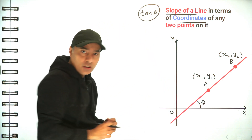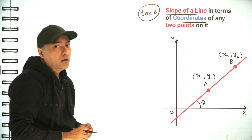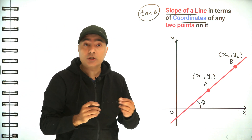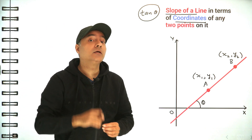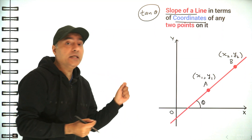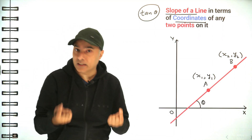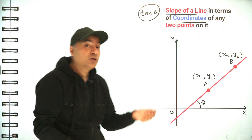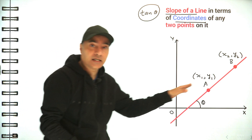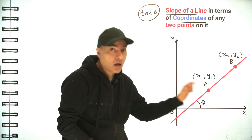All we have to do is find the value of tan(theta). Now tan(theta) is a trigonometric ratio, and to find the value of a trigonometric ratio we need a right angle triangle, so all we have to do is form a right angle triangle here.